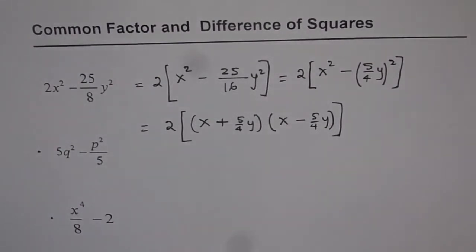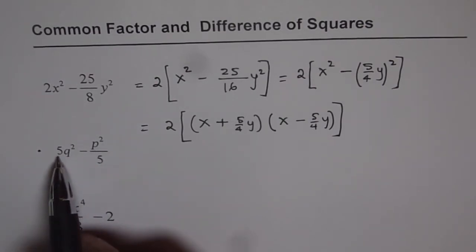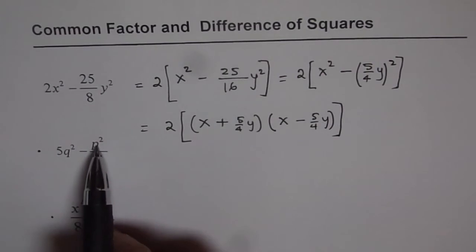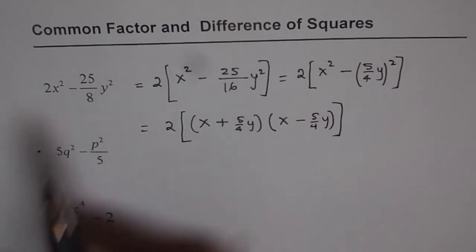Okay? But anyway, you have learned a way to factor. So let me show you the other one. What will you do? You will take 5 common. If you take 5 common, you are left with q². p² is already there. Denominator will be 5 times 5 or 5². And you can adopt the technique.